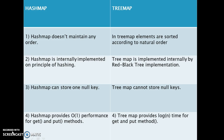HashMap can store only one null key, but TreeMap does not allow any null keys. The fourth difference is HashMap provides O(1) performance for get and put operations.